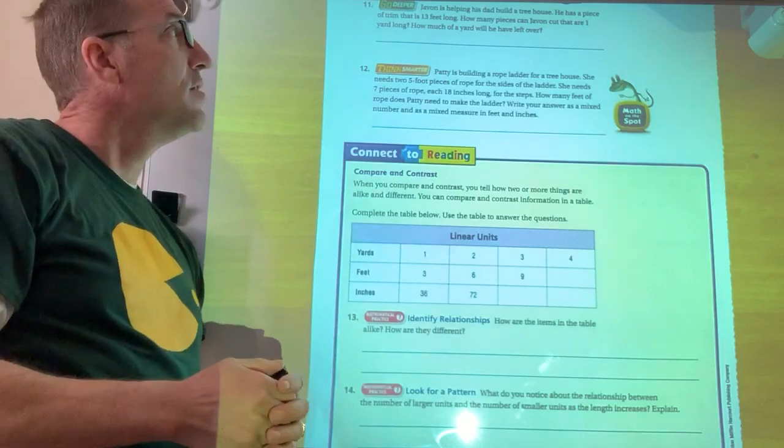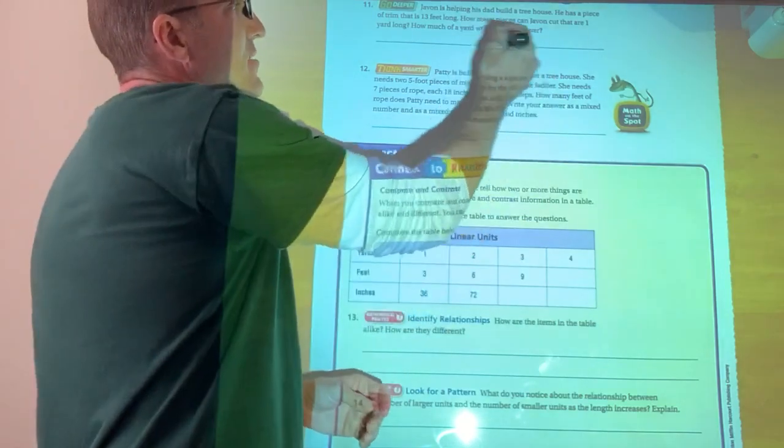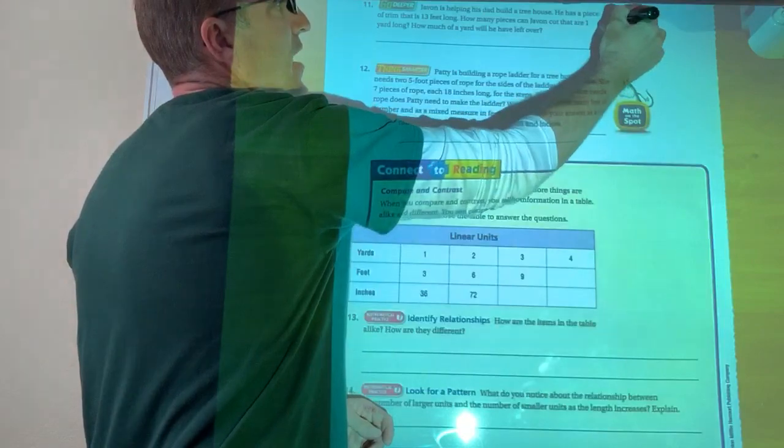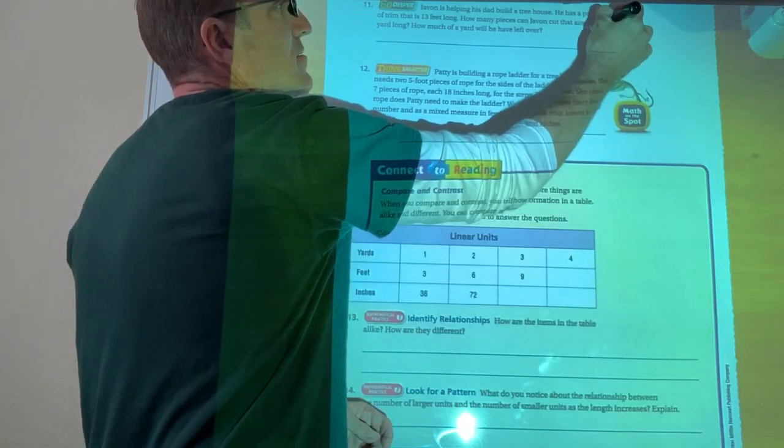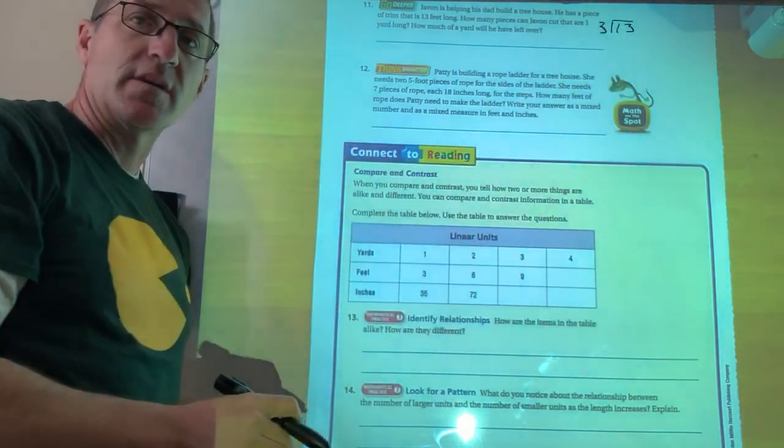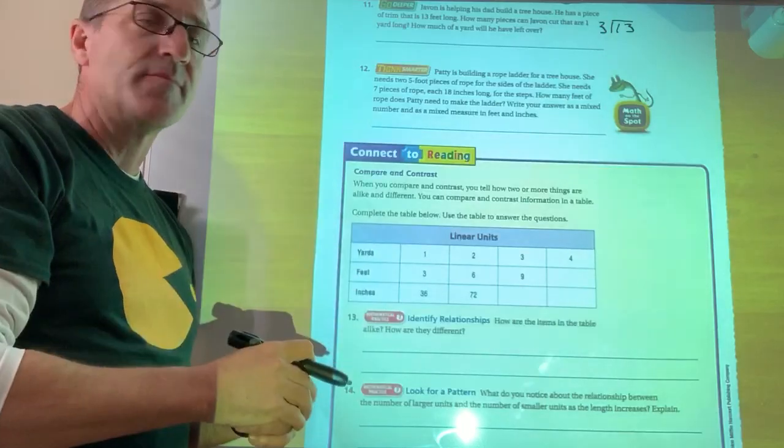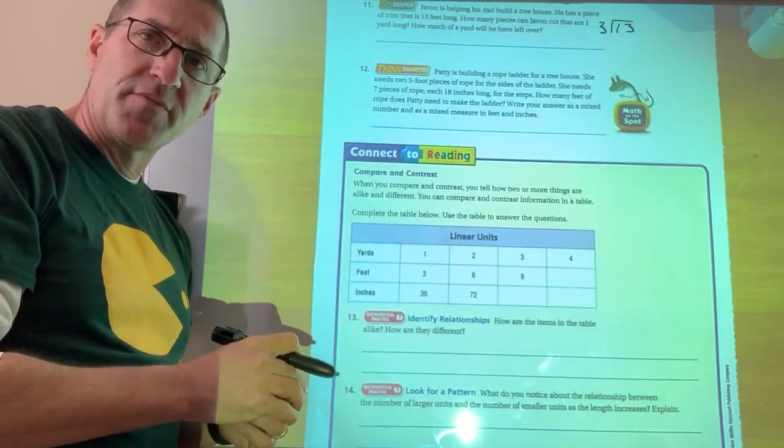It's going to be division. So we're just going to take our 13. And what are we going to divide 13 by? Three, right? So we're going to cut this up into the blanks of three.